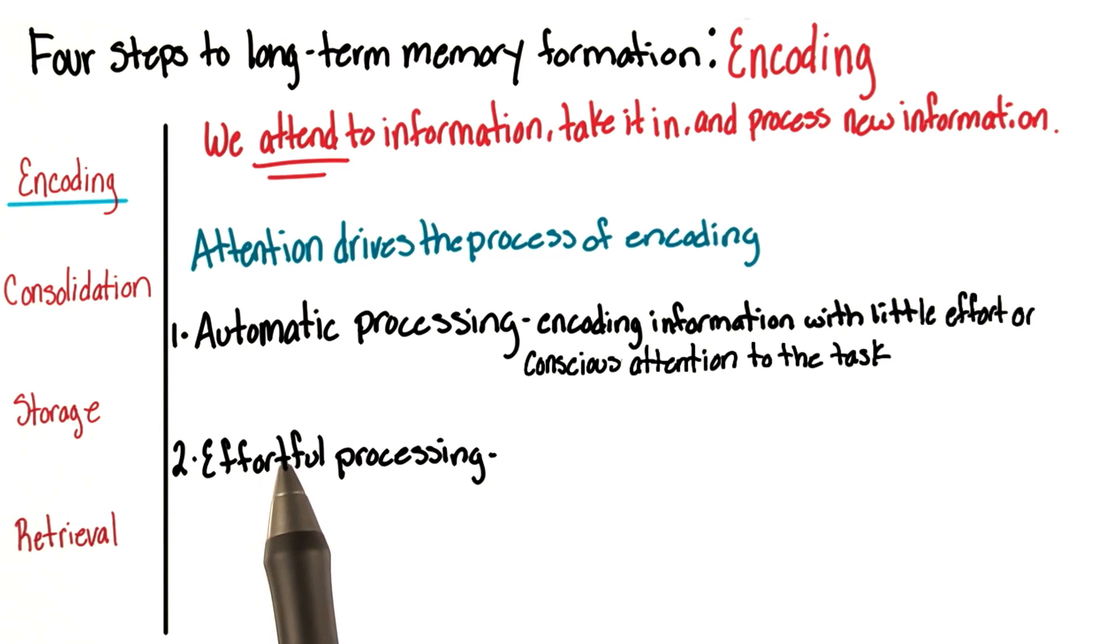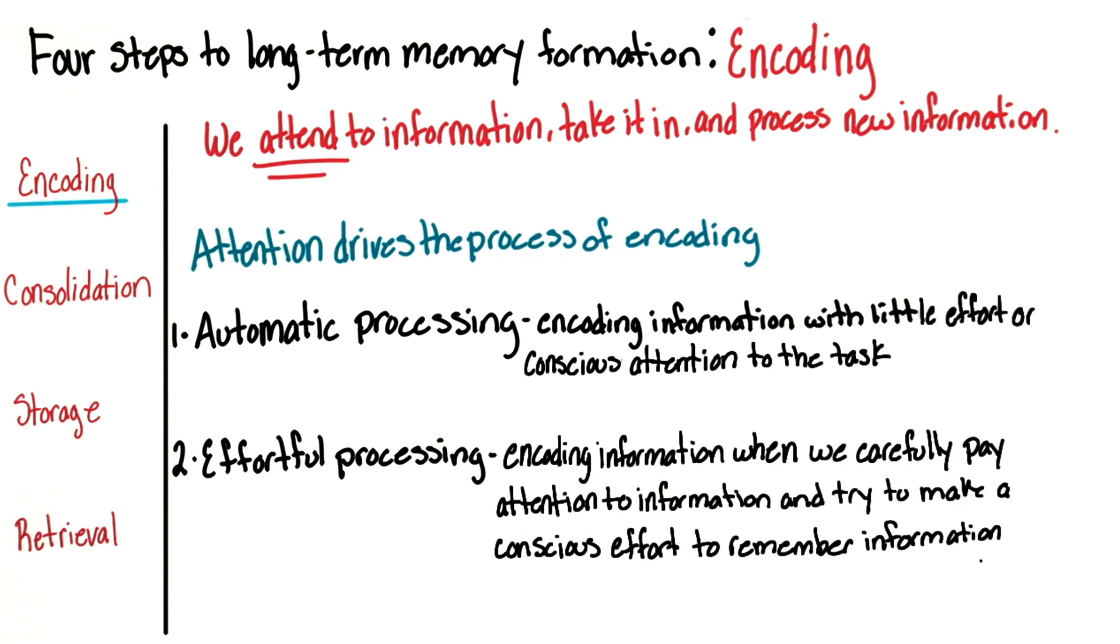The second type of encoding for long-term memory is termed effortful processing. Effortful processing happens when we carefully pay attention to information and try to make a conscious effort to remember the information. For example, the type of semantic memories that we have, such as remembering the names of the presidents of the United States or trying to remember the names of all the continents.